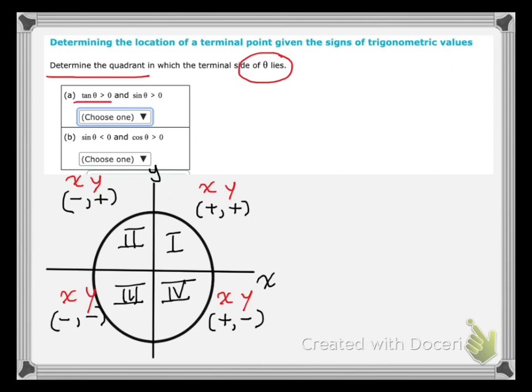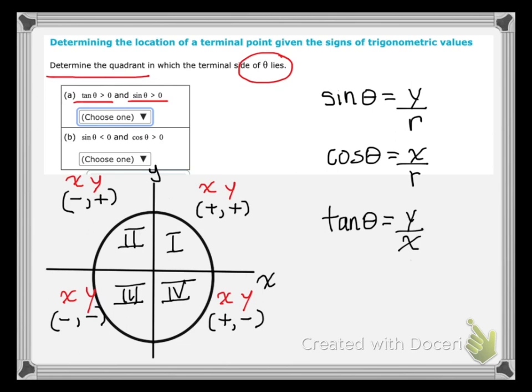We know that the tangent of the angle is greater than zero, and that the sine of the angle is greater than zero. Okay, so what does that tell us? Let's go back to our x-y-r definitions of trigonometry, of the trigonometric functions, and see if we can match up the x-y-r definition with this picture that I've given you at the bottom of the screen here.